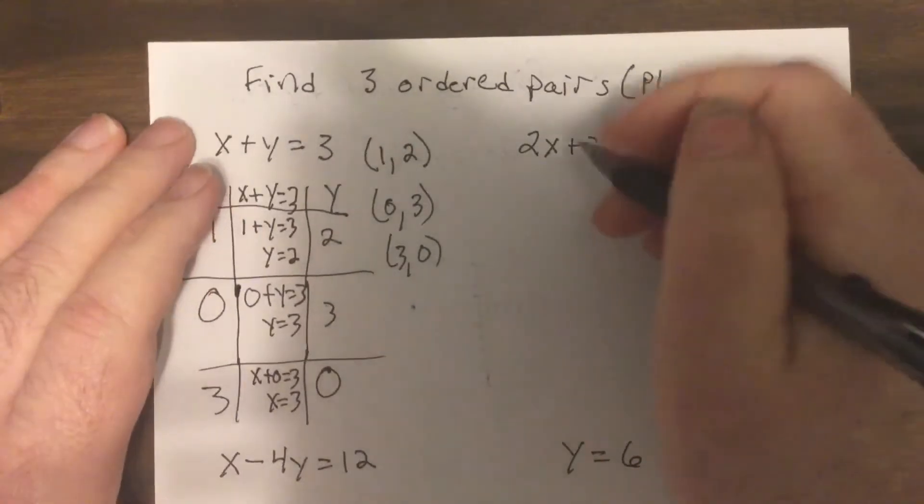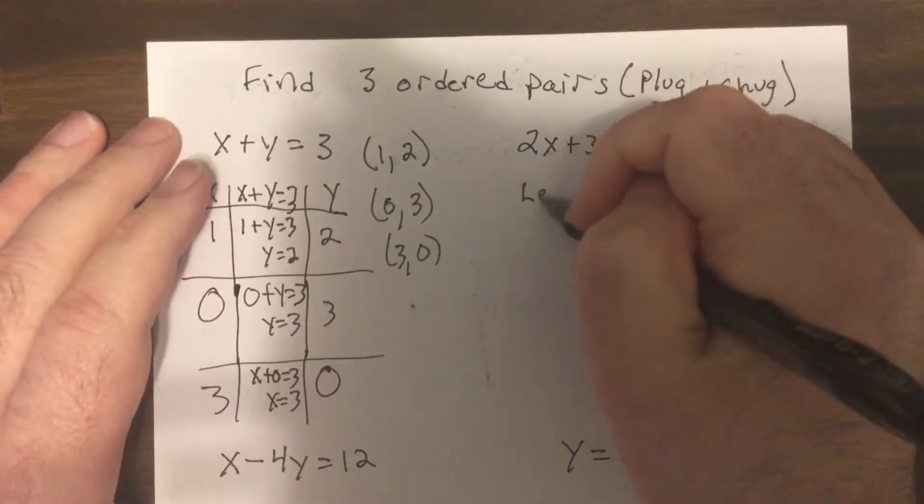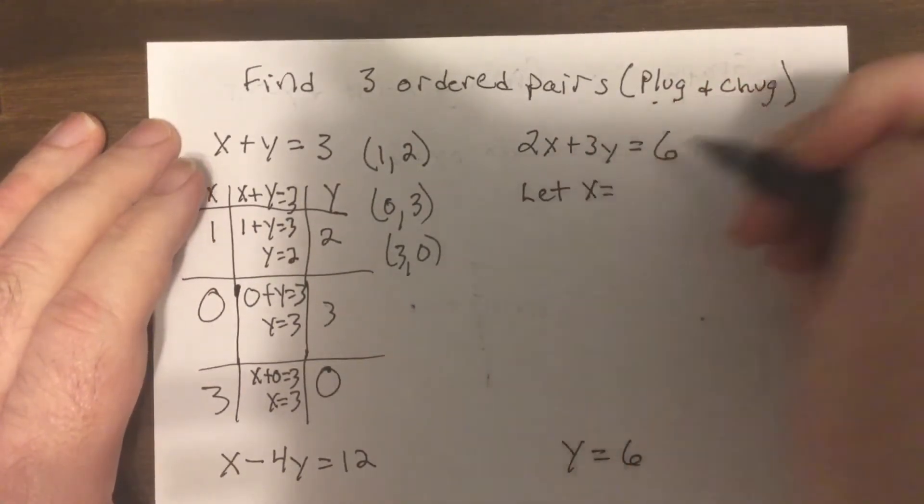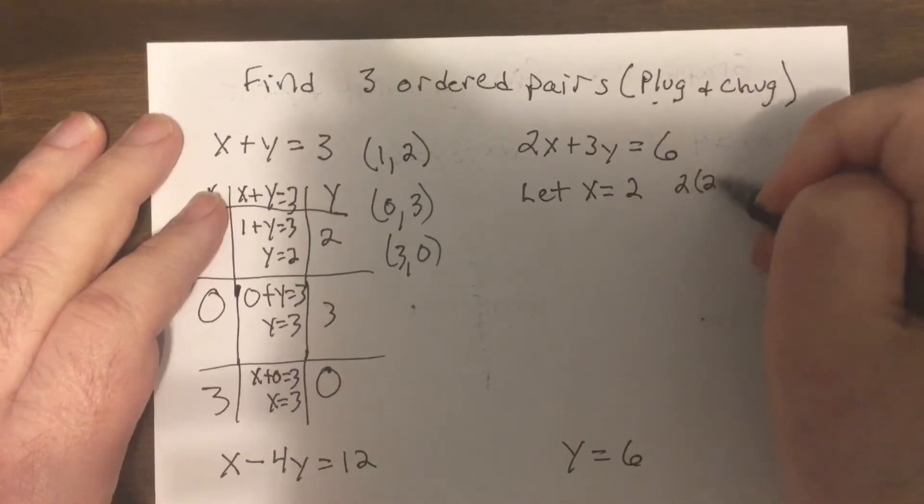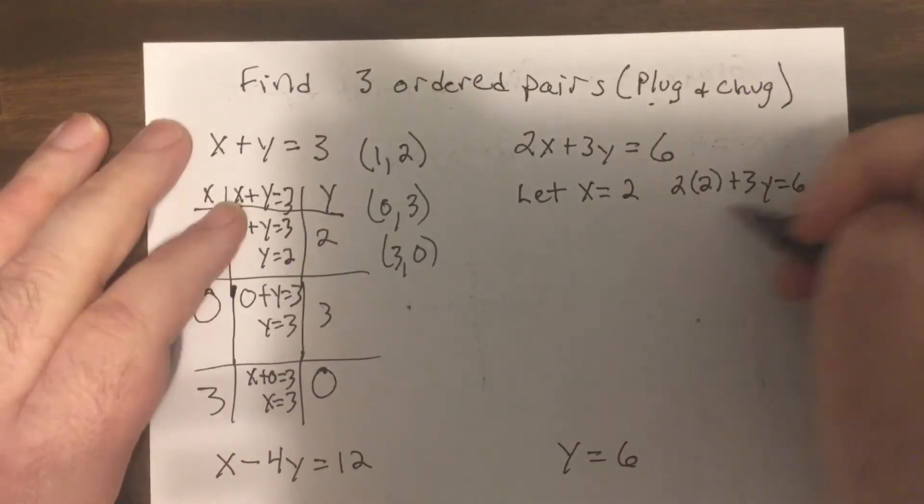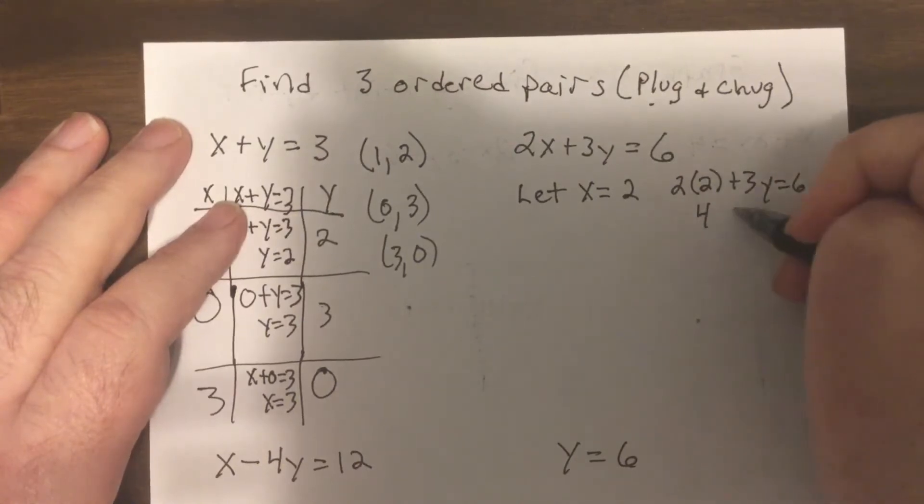Now notice the directions say nothing about graphing. All I want to do is find three ordered pairs. So here let's let X equal two. So I'd have two times two plus three Y equals six. So that's four.